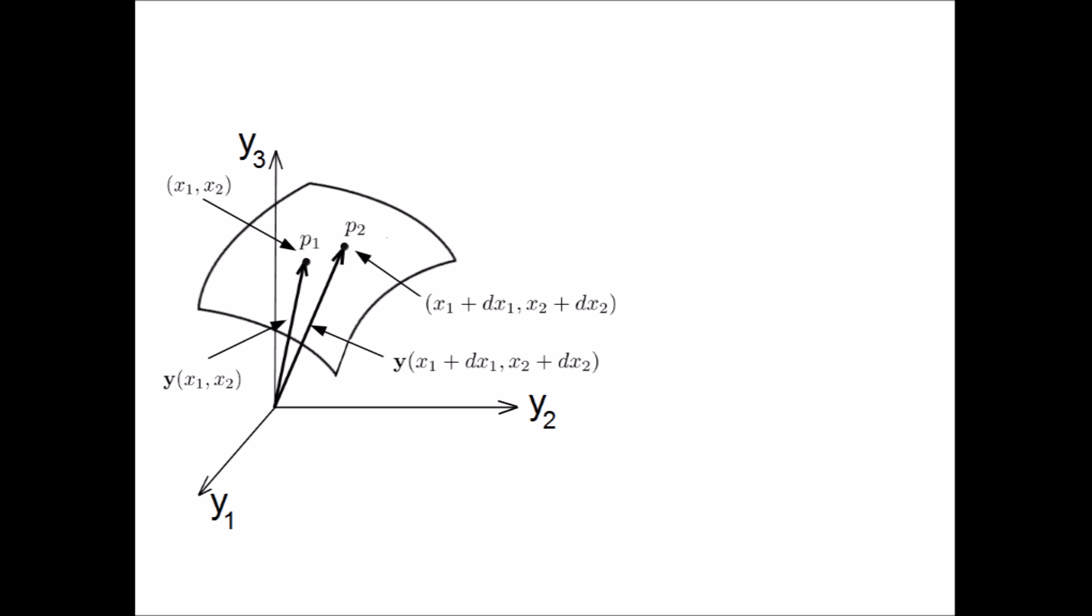For example, suppose we wanted to calculate some arbitrary but infinitesimal distance between two points on the surface, say p1 and p2. If p1 is located at x1, x2, then the coordinate of p2 will be x1 plus dx1, x2 plus dx2. The two points can be represented by the position vector y at p1 and p2. We can expand y at p2 in Taylor series up to the first order in dx1 and dx2 like so. Remembering the definition of the bases e1 and e2, we can write the expansion in terms of them.